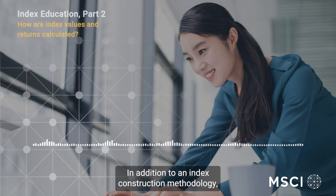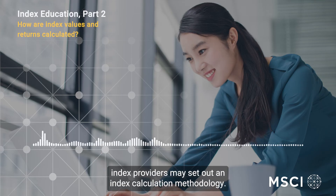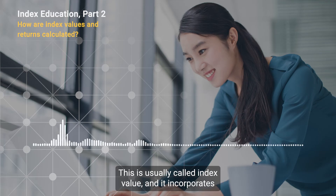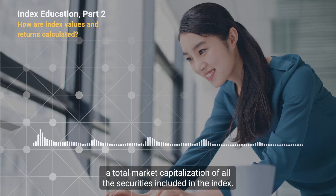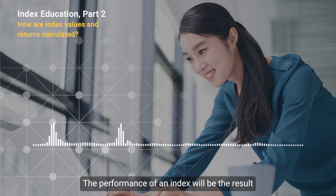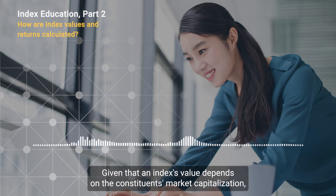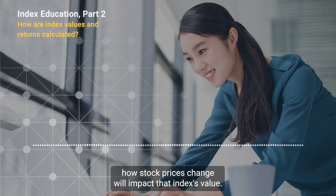In addition to an index construction methodology, index providers may set out an index calculation methodology. That methodology can define how the aggregate value is calculated at any point. This is usually called the index value, and it incorporates the total market capitalization of all the securities included in the index. The performance of an index will be the result of how that value changes over time. Given that an index's value depends on the constituents' market capitalization, how stock prices change will impact that index's value.